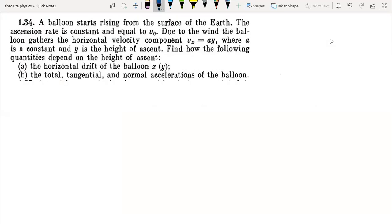Today we will solve problem number 1.34 from Irodov. A balloon starts rising from the surface of earth. The ascension rate is constant and is equal to v0. Due to wind, the balloon gathers a horizontal velocity component equal to ay, where a is a constant and y is the height. Find how the following quantities depend on the height.